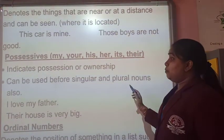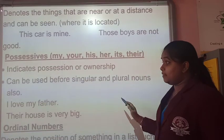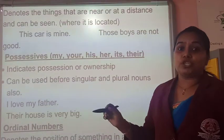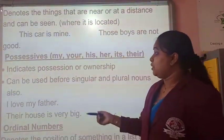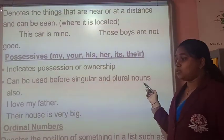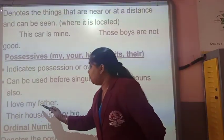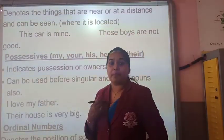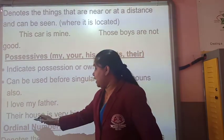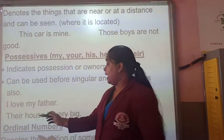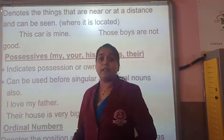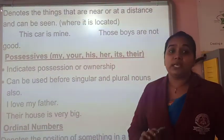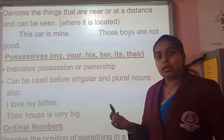Coming to the next one — possessive determiners. As I told you, they indicate position or ownership — the ownership of the nouns we speak about. We can use them for singular and plural nouns. For example: 'I love my father.' Here the word 'my' denotes possession. 'Their house is very great.' 'Their' is also a possessive determiner in the plural form. So we use possessive determiners for singular nouns as well as plural nouns.